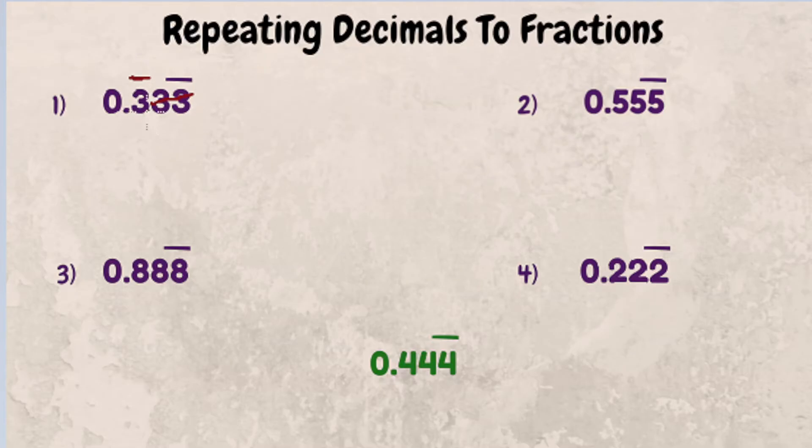But it just simply means that this digit right here will keep on repeating into infinity. So when you have one digit that continues to repeat, it's a really simple trick. All you do is put that number over nine.